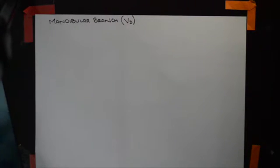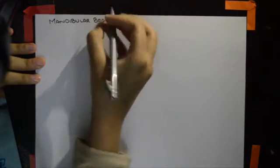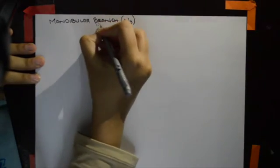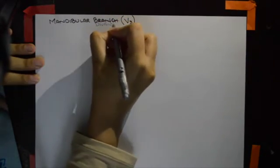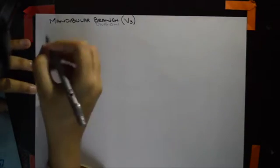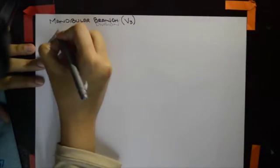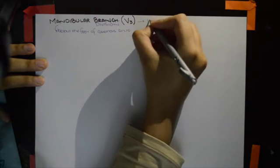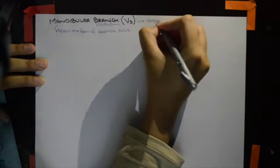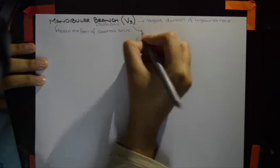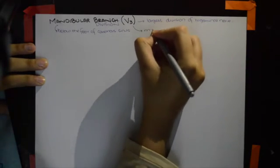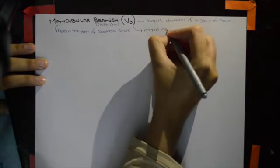Let's start with the mandibular division, which is V3. It is present below the floor of the cavernous sinus and is the largest division of the trigeminal nerve. It is also a mixed nerve.